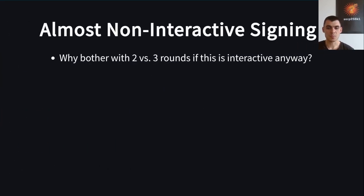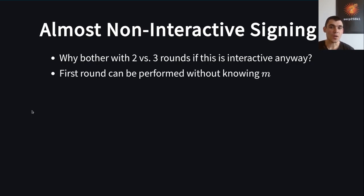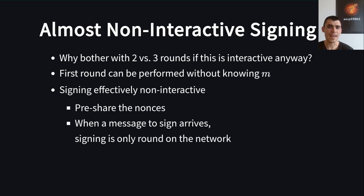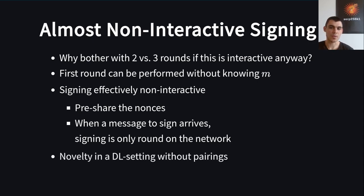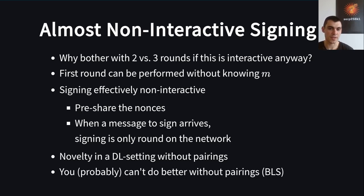Why do we bother so much with the distinction between 2 and 3 rounds if the scheme is interactive anyway? The answer is that it is not only the number of rounds that matter in practice. The first round of MuSig2 can be securely performed without knowing the message M, making signing effectively non-interactive. At any time convenient to the signers, the nonces can be pre-shared by executing the first communication round. For example, the two ends of a payment channel can pre-share nonces when the connection is established — then when a message to sign arrives, signing is just a single message on the wire. This is a novelty in a discrete logarithm setting without pairings and is probably the best round efficiency achievable without pairings.